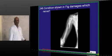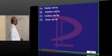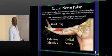What is this condition? Fracture of the humerus which injures the radial nerve because the radial groove.